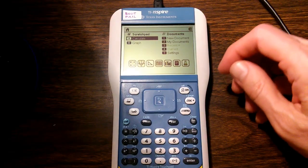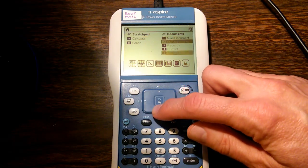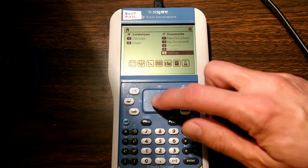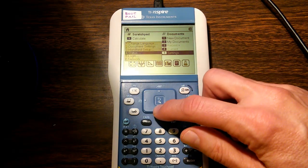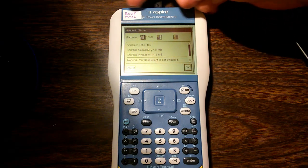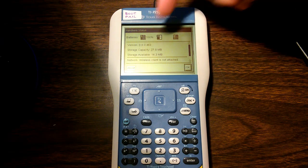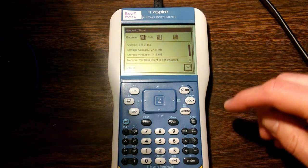Now just to confirm that we've got the right version of the software, I'm going to check. We go down to settings and then status. And it tells us we have version 3.9.0.463. Very good. That's what we want.